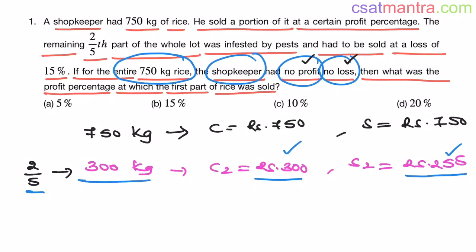Now, the first portion that would be 450 kg, my friends. 300 plus 450 that is 750. This is three-fifth part of the 750 kgs. So, its cost price would be 450 rupees because 1 rupee per 1 kg.